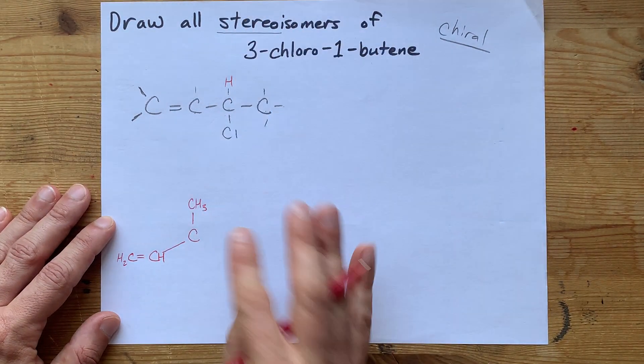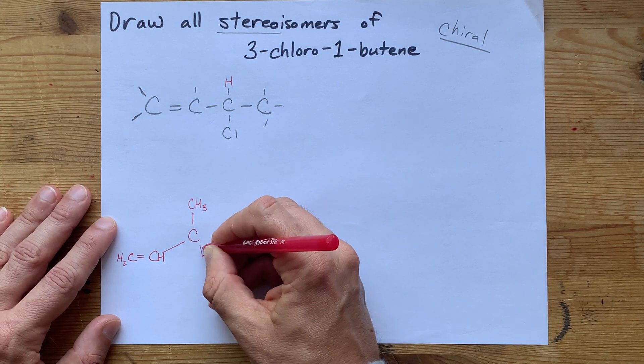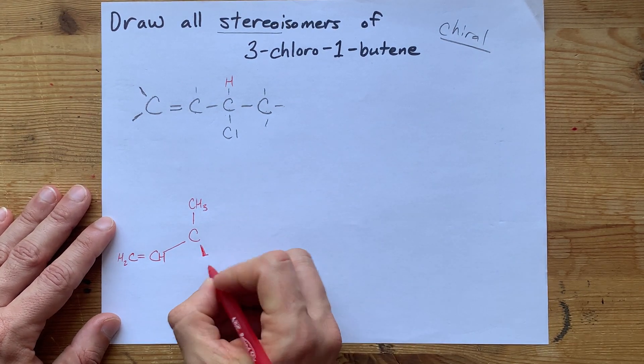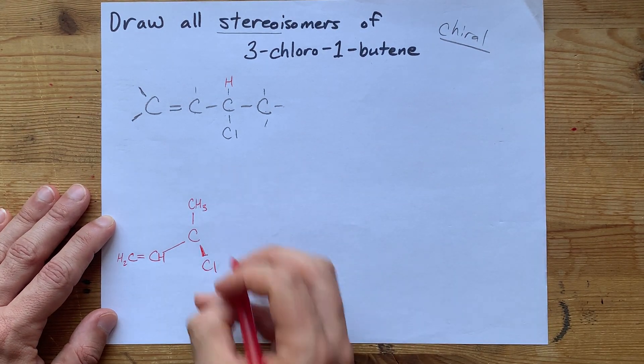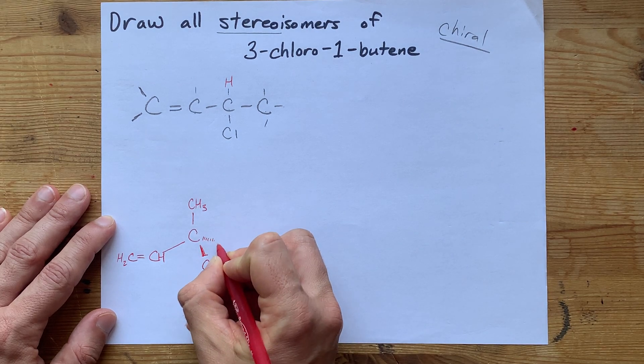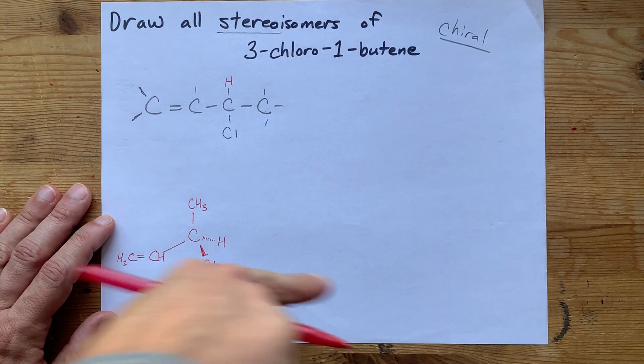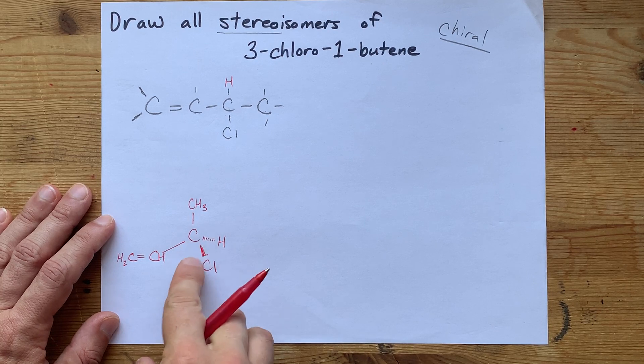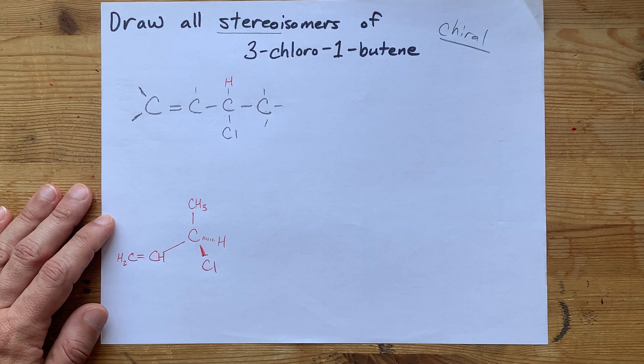The way you show stereocenters is to have one of them coming out at you. I'm going to choose for the Cl to be there first. And have the H kind of going into the page. That's what these symbols mean - coming out at you and going into the page.